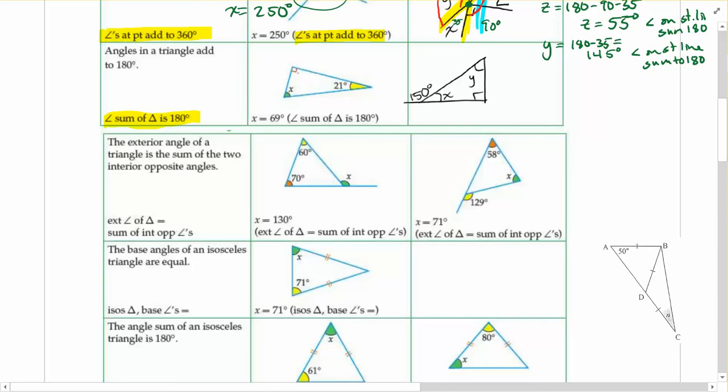In this problem here we've got a 90 degree angle, 21 there, and we know what x is going to be. If we go x is equal to 180 minus 90 minus 21, you should get 69 degrees. And our reason there, as an abbreviation, you can say angle sum of triangle is 180.